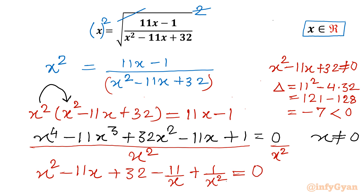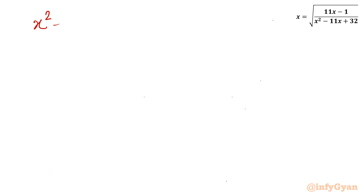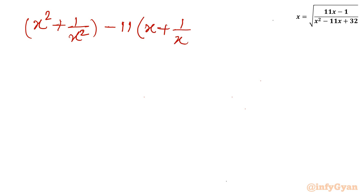Now I will collect the first and last terms, and the second and second-last terms together. So I write: (x squared plus 1 over x squared) minus 11 times (x plus 1 over x) plus 32 equals 0.